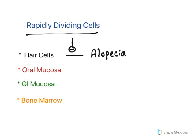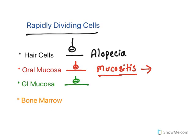Oral mucosa is also under continuous multiplication, so it will also be affected by chemotherapeutic agents, resulting in mucositis — inflammation of the oral mucosa. Oral hygiene is very important because that inflammation exposes blood cells and everything, which may result in infection. So oral hygiene is very important when people are taking chemotherapeutic drugs.